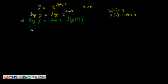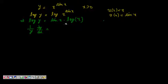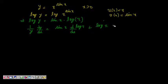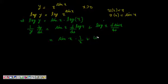Now we differentiate both sides with respect to x. By the chain rule, the left side becomes 1 by y times dy by dx. The right side involves a product, so by the product rule: the derivative of sine x times log x is sine x times d log x by dx plus log x times d sine x by dx. This gives sine x times 1 by x plus cos x times log x.